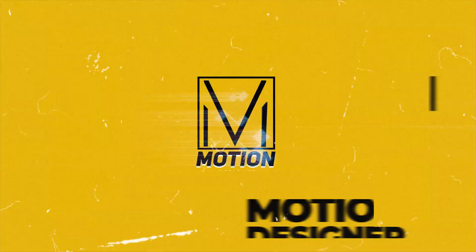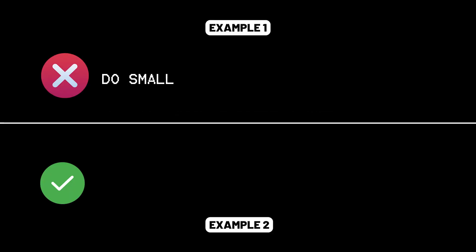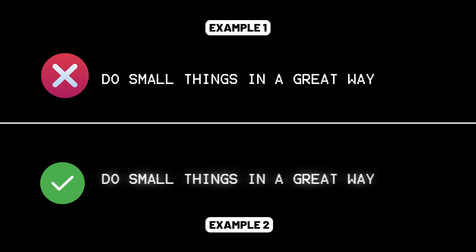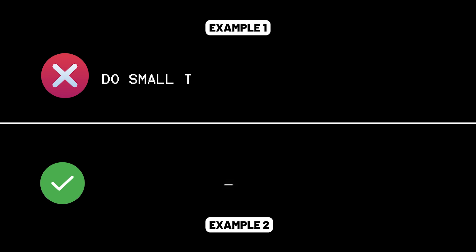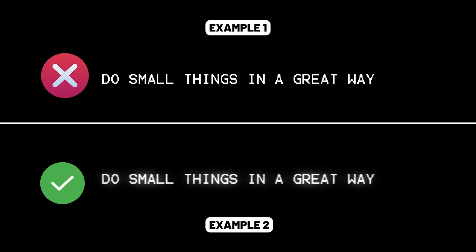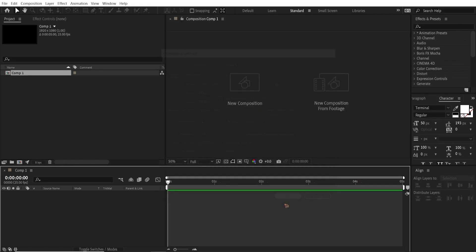In today's video we're going to create a type-on text effect in After Effects. There are two ways you can create this: the first is the simplest way, which is just revealing the text, but the second one is moving the text position while revealing the text.